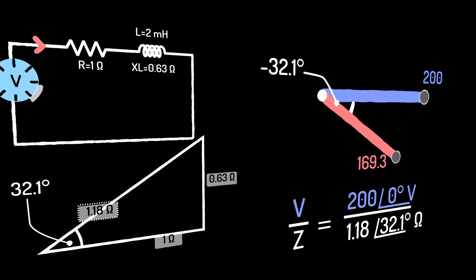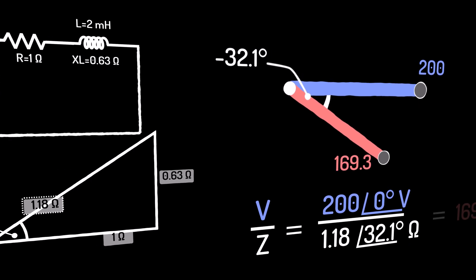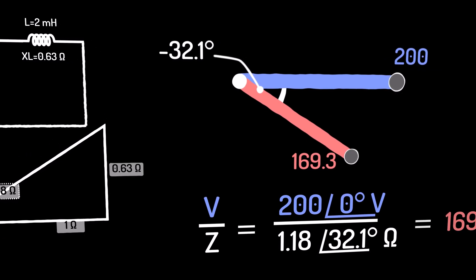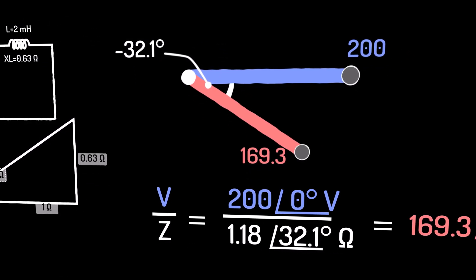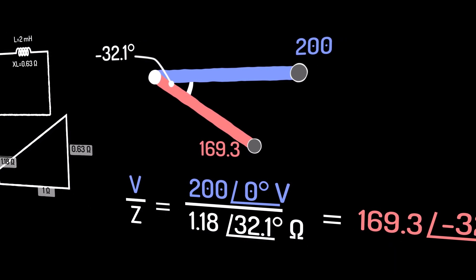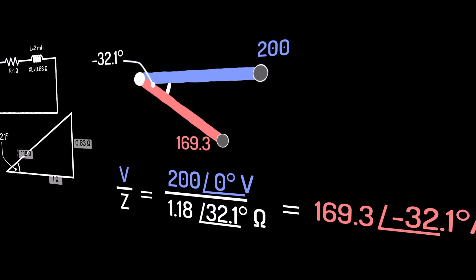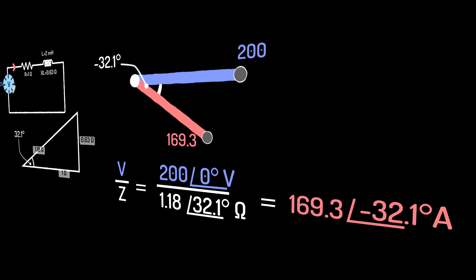So the extra complexity of expressing voltage and current as two trigonometric functions now begins to make sense, because now division, the calculation of Ohm's law, becomes incredibly trivial, especially in polar notation.